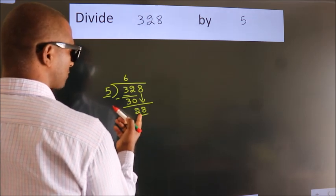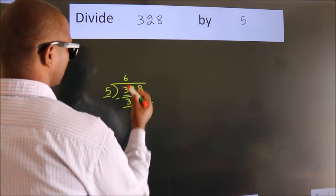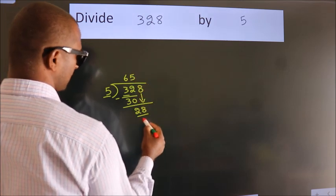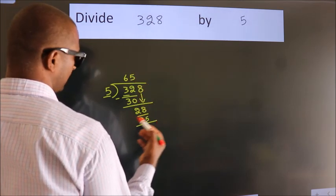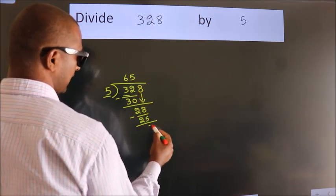A number close to 28 in the 5 table is 5 times 5, which is 25. Now we subtract. We get 3.